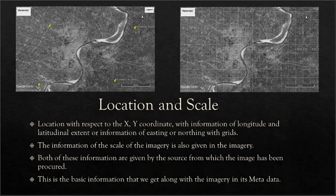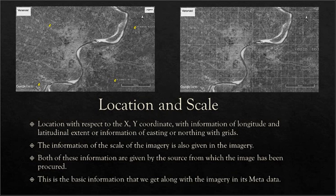Scale is very important because whatever features are present in the imagery will depend on the scale of the imagery. Both of these — location and scale — are basically given by the source of the imagery. Wherever we have collected the imagery from, it will provide us with this information of location, scale, northing, and easting, either in grids or as XY coordinate information. This will be attached with the metadata of the imagery.